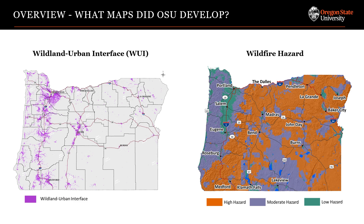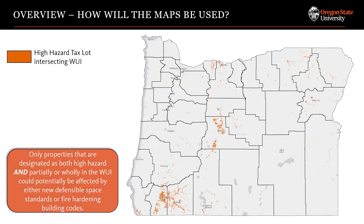Those two maps are the Wildland Urban Interface and Wildfire Hazard. The Wildland Urban Interface represents areas of Oregon where structures are intermingled with vegetation and where, if a wildfire occurs, we're concerned about the potential for a community disaster. Wildfire Hazard represents the potential for wildfire to damage a structure as a result of the surrounding climate, weather, topography, and vegetation. The purpose of these maps is threefold.